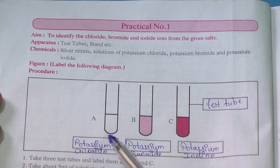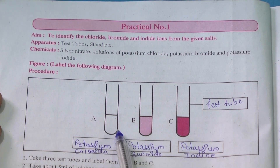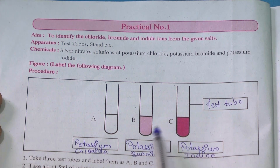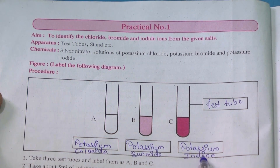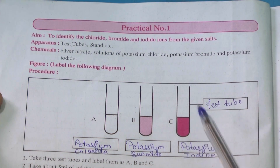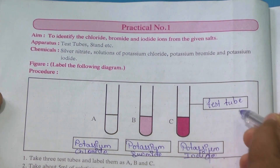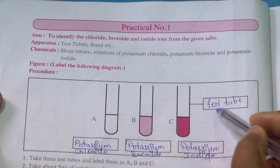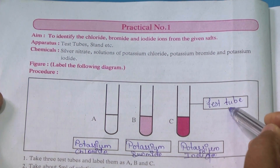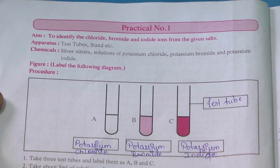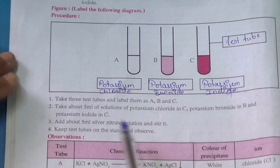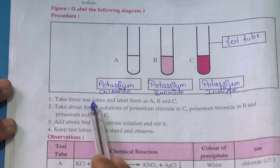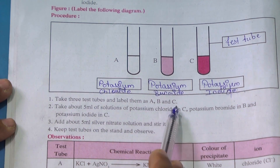The solutions we will be making: in test tube A we will have potassium chloride, in test tube B we will have potassium bromide, and in test tube C we will have potassium iodide. We have taken 3 test tubes labeled as A, B, and C, as per your practical notebook.